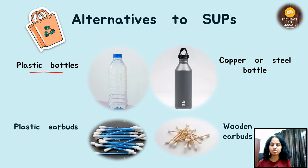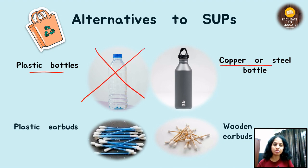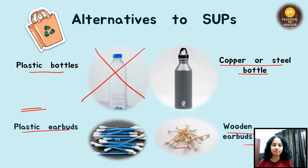Next is plastic bottles — instead of using a plastic bottle once and throwing it away, you can use a permanent copper bottle or a steel bottle. Then, replace plastic earbuds — now there are wooden earbuds and steel earbuds available, so you can use those instead.